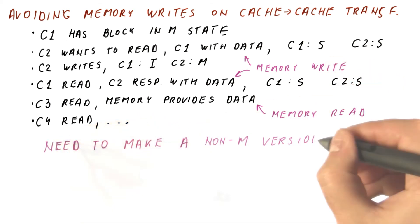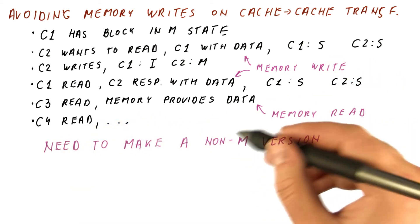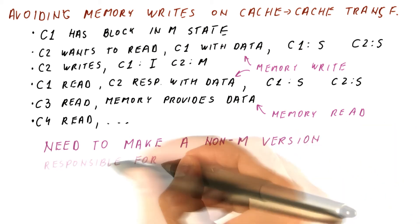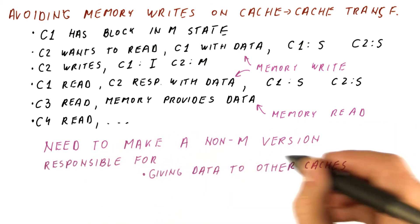But to do this, we need to make a non-modified version of the block in one of the caches responsible for giving data to other caches when they want it so that the memory doesn't need to respond.